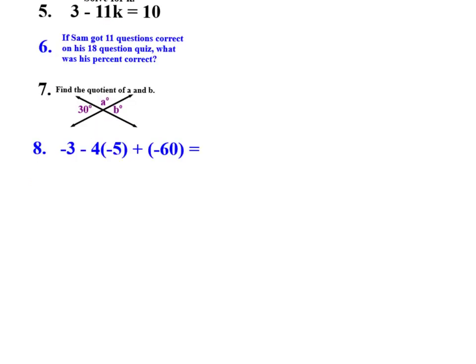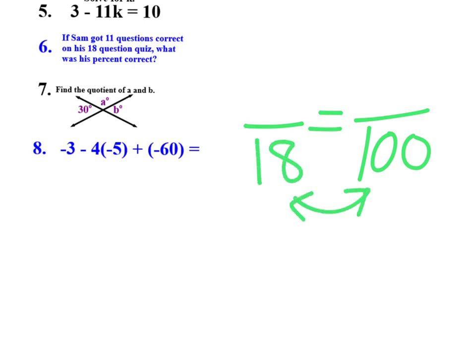Number 6 is a percent problem. So right away, percent proportion. If Sam got 11 questions correct on his 18-question quiz, what was his percent correct? Notice that there's no 'is' and 'of' here to tell you part and whole, but you can say, well, what would have taken him to get 100%? Wouldn't he have had to get 18 correct? So there's your connection.